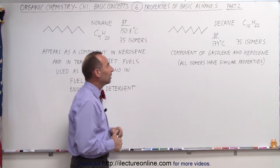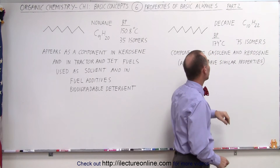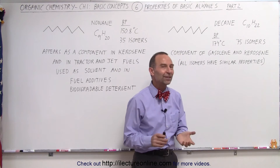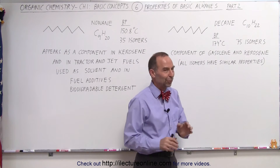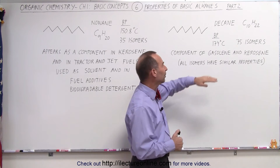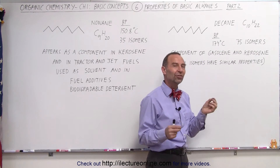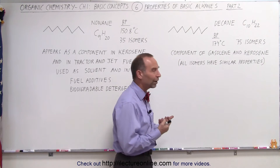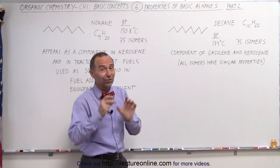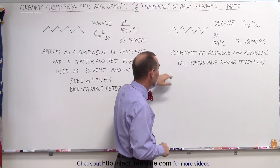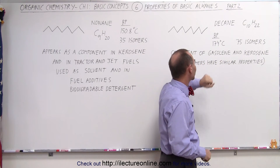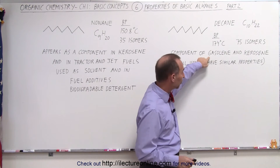When we get to decane, notice we now have 10 carbons and 22 hydrogens, with a boiling point a little higher again at 174 degrees centigrade. Notice there are 75 different isomers, and we're not going to try and find all of them. We'll learn how to go through the process of finding them, but that would take a lot of work, especially since with more and more isomers you're going to find different structures that look different but actually are the same — it gets very complicated. Notice again that decane is also used as a component of kerosene and as a minor component of gasoline.